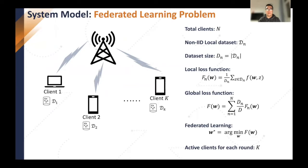Federated Learning has been proposed as a convincing technology, which allows the server to obtain the global machine learning model via distributed local datasets, and at the same time protect users' privacy. Let's consider a wireless Federated Learning system, as shown in this figure, where a total of n clients are involved in the Federated Learning task. Each client has its own non-IID local dataset d_n, and the local loss function of each client is f_n. The global loss function of the Federated Learning task is the weighted sum of the local loss functions according to the size of the local dataset.